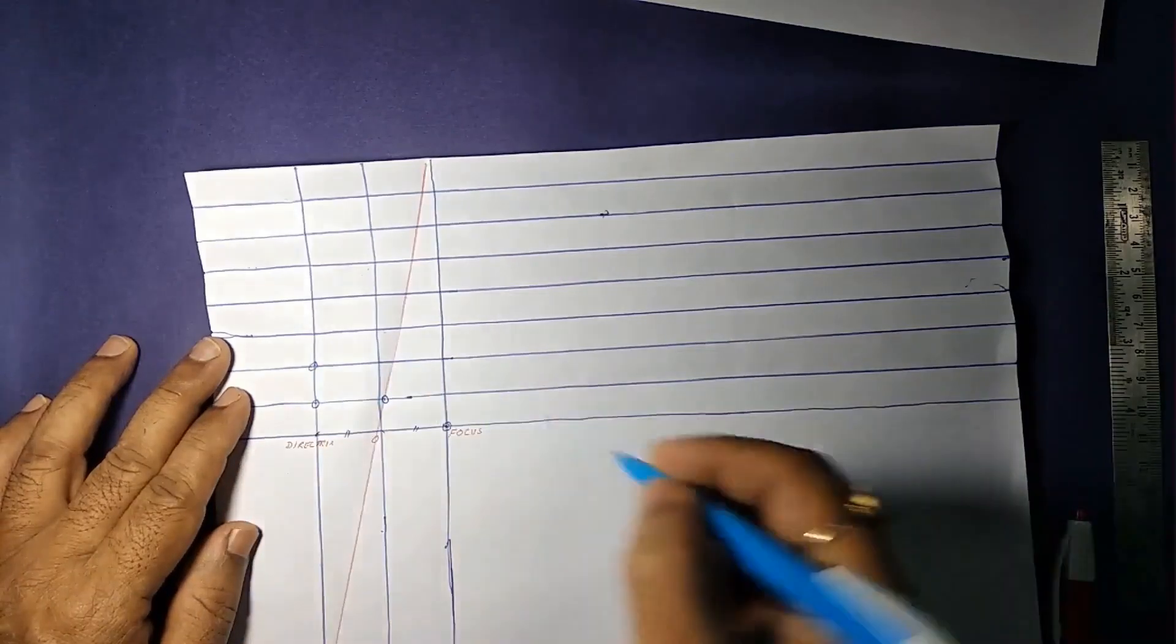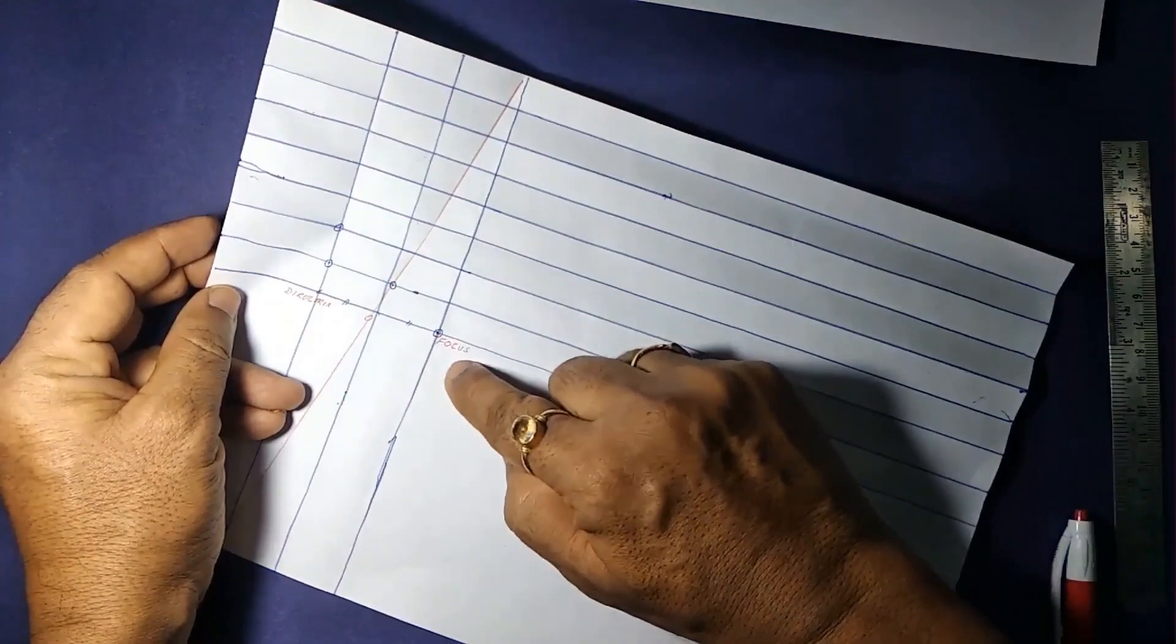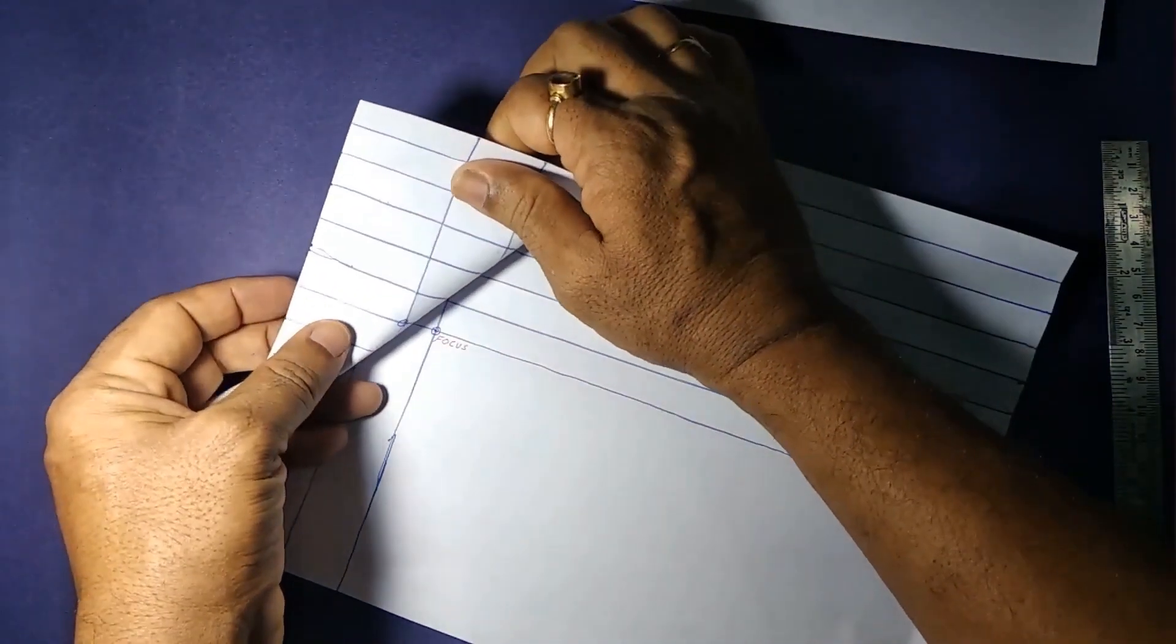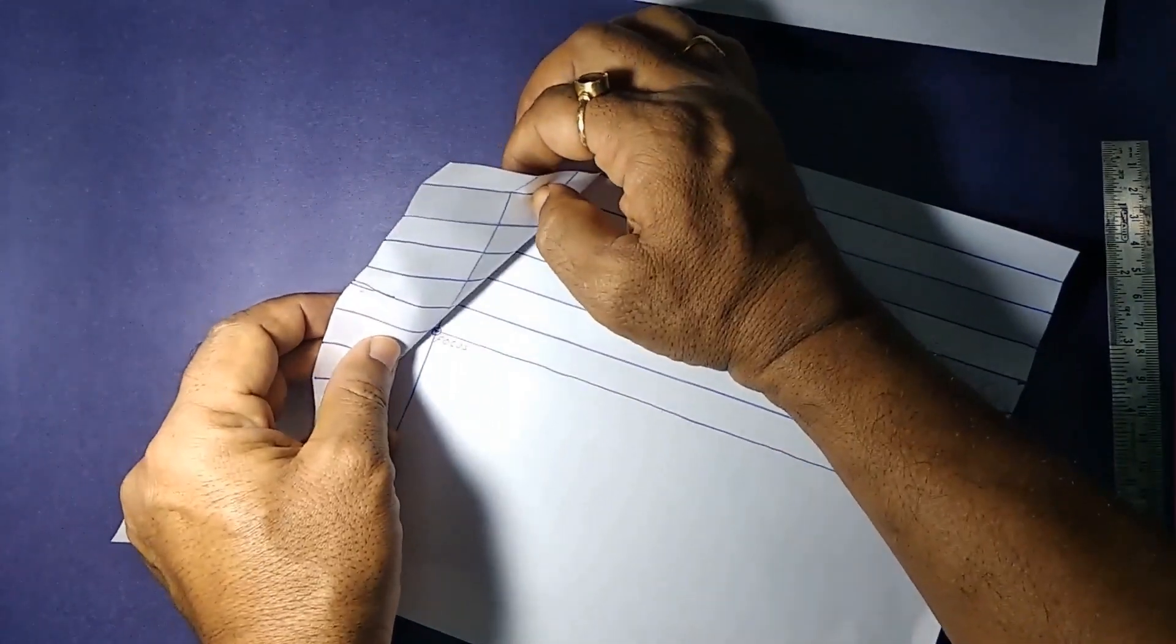We go to the next point. And we do the similar way. Overlap that point onto the focus. And make one more crease or line. And a fold.